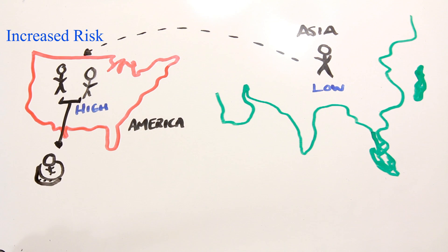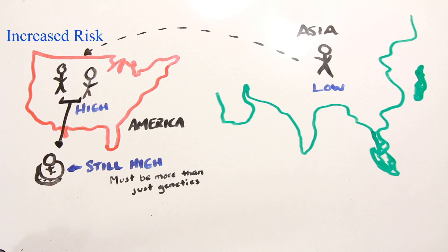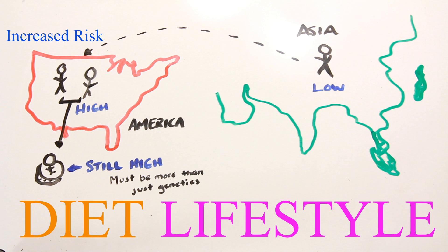On top of this, American-born babies of Asian descent have nearly the same incidence of prostate cancer as Caucasian babies born in America. This clearly illustrates that some of the contributing factors must be diet and lifestyle-based.